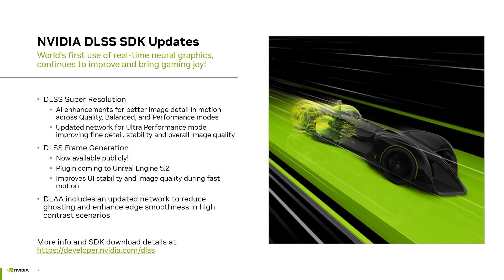So that's a little bit about how DLSS functions. And now I wanted to get the word out to developers that the DLSS SDK has had some significant updates. Firstly, with super resolution, we've further enhanced the neural network for the standard upscale modes, and we've also added a new network just for the ultra performance mode — that's where we're doing a 9x upscale. The big news, though, is that DLSS frame generation is now available publicly. It's also going to be coming to Unreal Engine version 5.2, and we've put in several enhancements to improve the quality of the generated frames, especially for UI elements and especially when there's significant motion and motion blur going on in the scene.